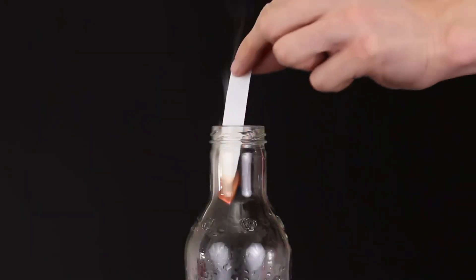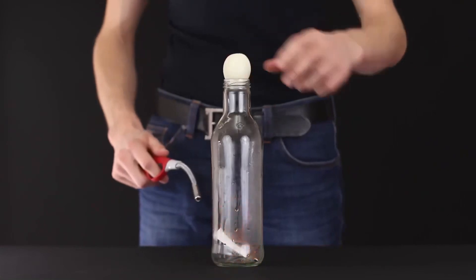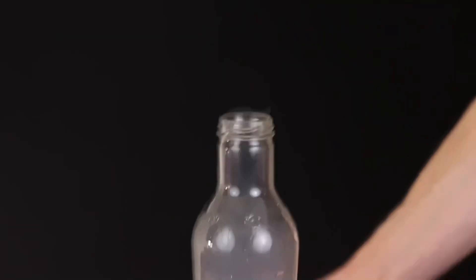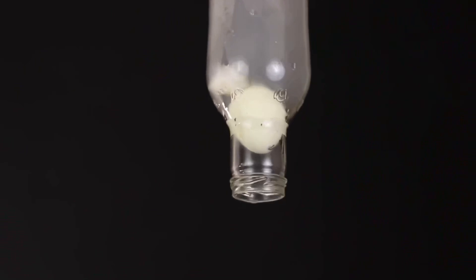The same trick can be done with a burning piece of paper. The fire will burn all the oxygen inside and the egg will be drawn inside even faster.